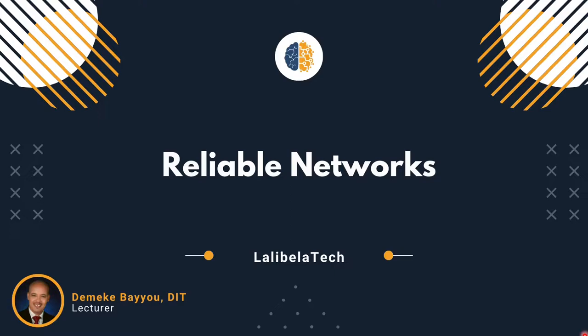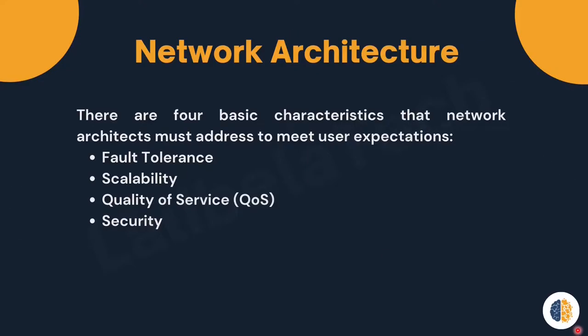Reliability of a network can be defined as ensuring that each packet or segment that a source sends will arrive to the destination. Reliability can be achieved by designing a network architecture that considers the following: fault tolerance, scalability, quality of service, and security. In the next slides, we are going to discuss each of them in detail.